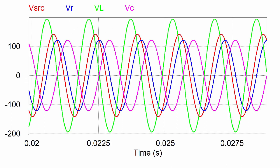After finishing the calculations, I ran a simulation of the circuit. The red sinusoidal signal is the source voltage, the blue one is the voltage across the resistor, green is the voltage across the inductor, and pink is the voltage across the capacitor. Counterintuitively, the inductor voltage has an amplitude higher than the source voltage. But what matters is not the individual amplitudes — it's the sum of those voltages that must equal the source voltage when Kirchhoff's voltage law is followed, as confirmed in the calculations.